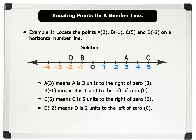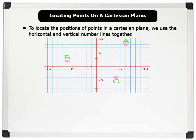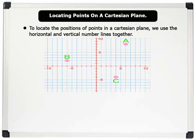Now let us locate points on a Cartesian plane. To locate the positions of points in a Cartesian plane, we use the horizontal and vertical number lines together.